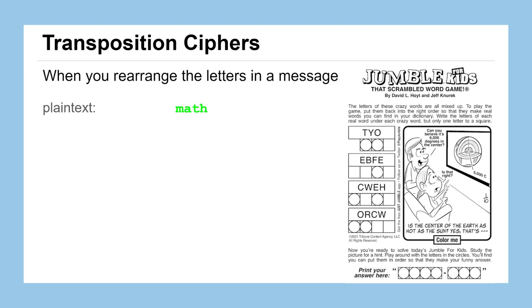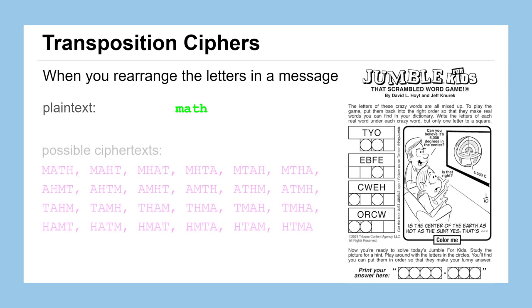You can see here that this small word in plaintext, math, has many different possible ciphertexts just by shuffling around those four letters. In fact, there are 24 different rearrangements. Now, you might think this isn't very secure because you can just look at those four-letter rearrangements and probably guess the word was math, even if you didn't know that.